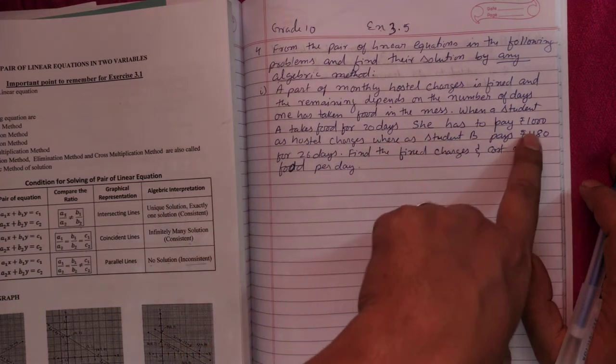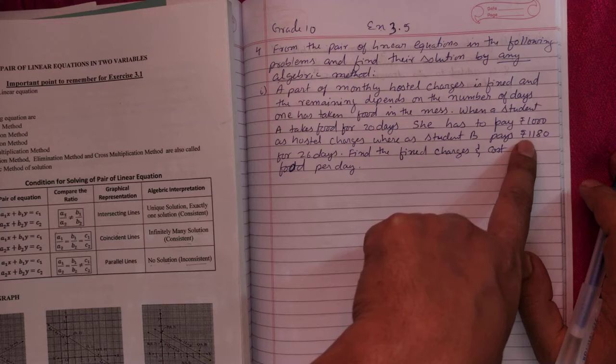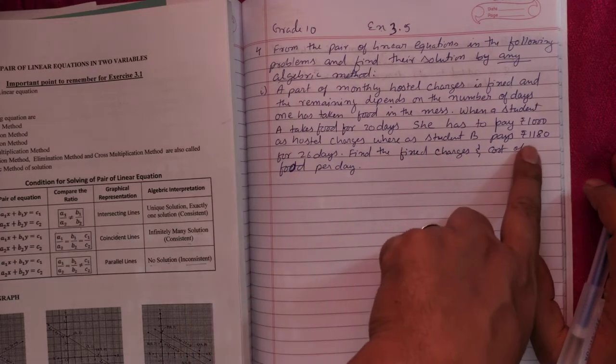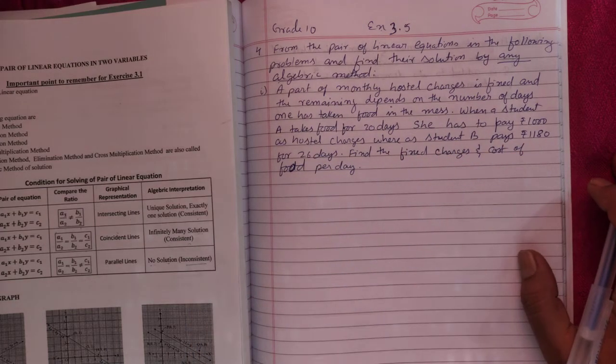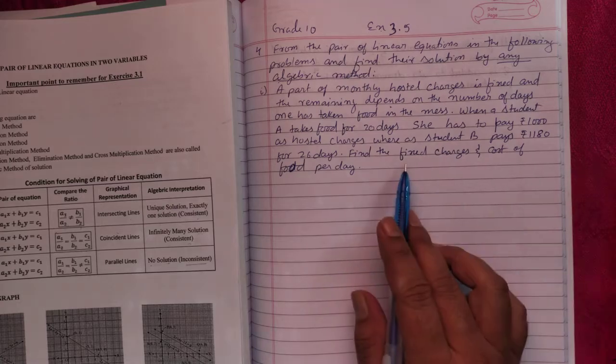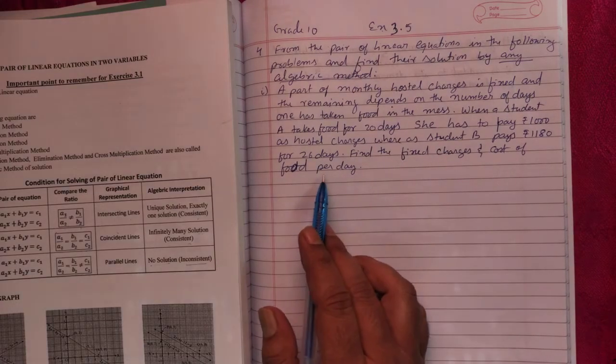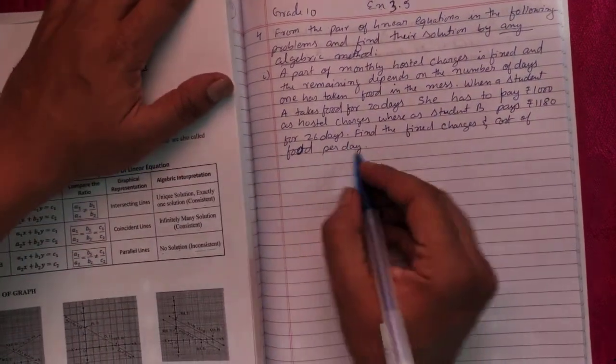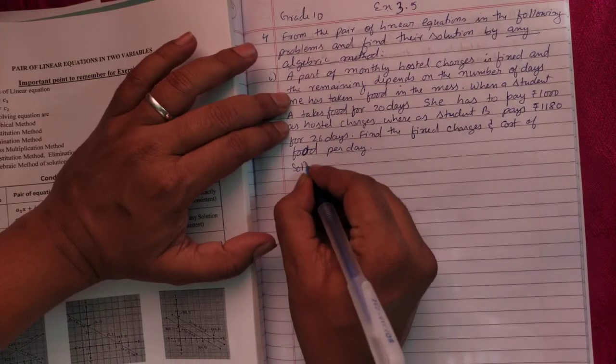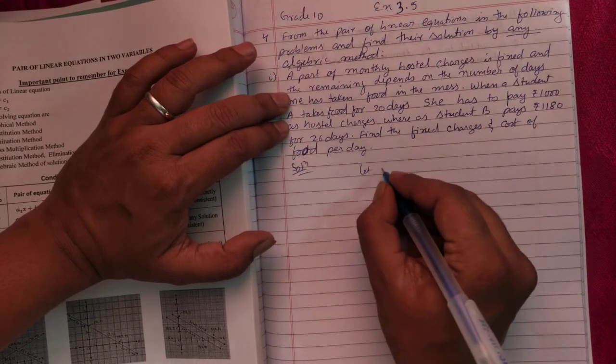If a student takes food for 20 days, she has to pay 1000 rupees. If she takes food for 26 days, she has to pay 1180 rupees. So your question is to find the fixed charge and the cost of food per day.